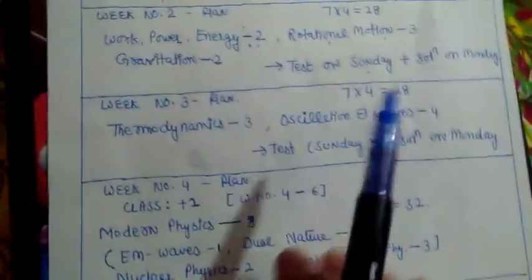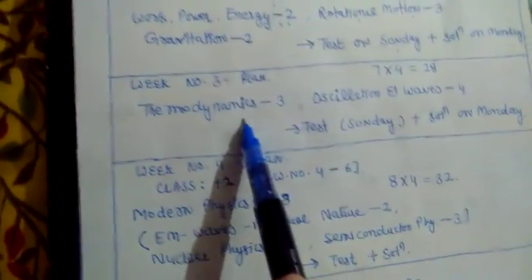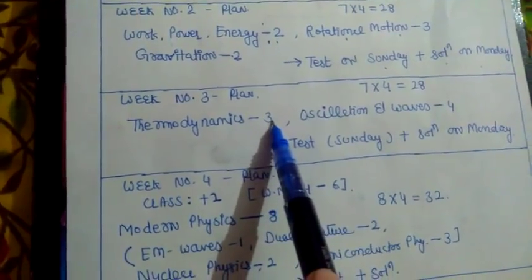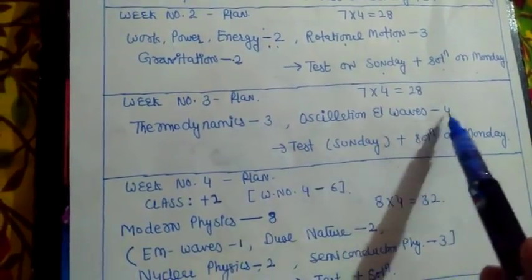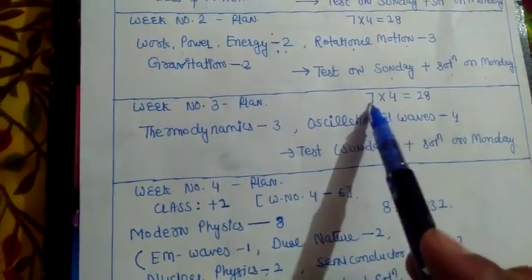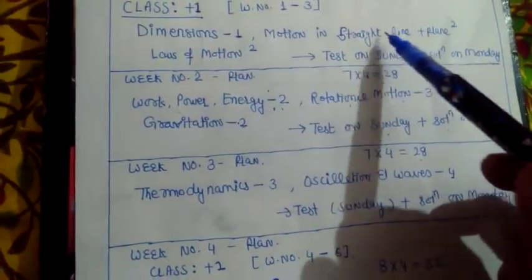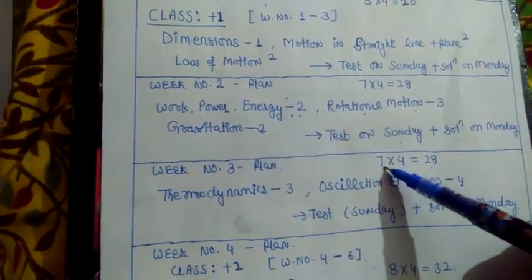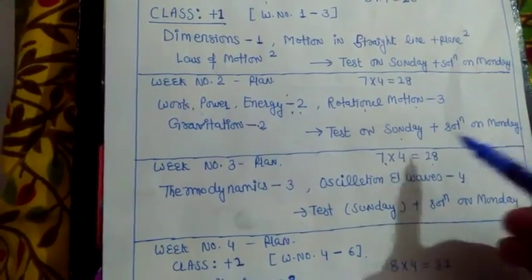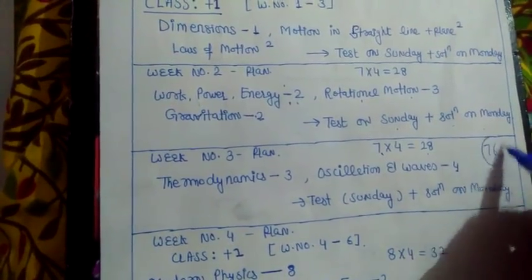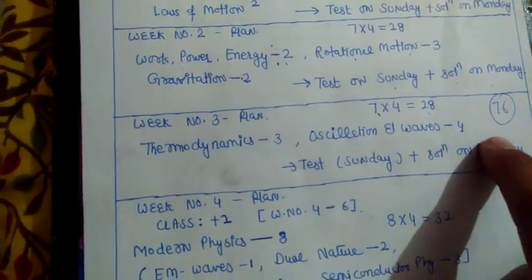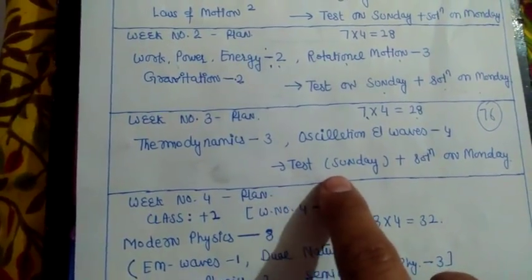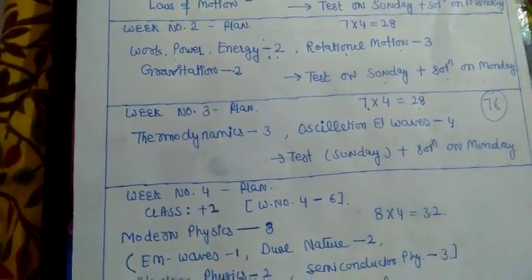For the third week, what will be the plan? In week three, we will discuss Thermodynamics, Oscillations, and Waves. From Thermodynamics there are three questions, and from Oscillations and Waves there are four questions — seven into four means 28 marks. So in the first three weeks, we will cover 5, 7, then 12 — 12 plus 7 is 19 questions, meaning 19 into 4 equals 76 marks scored. By the end of the third week, I will upload the test series and solution on Monday.